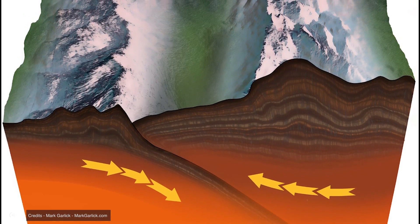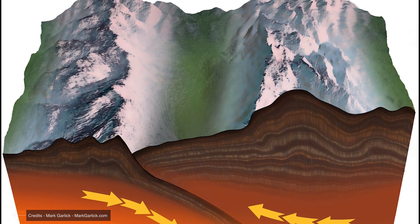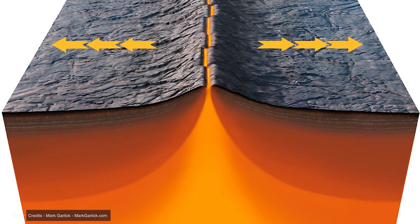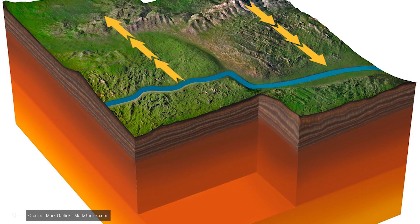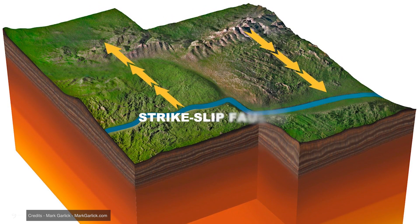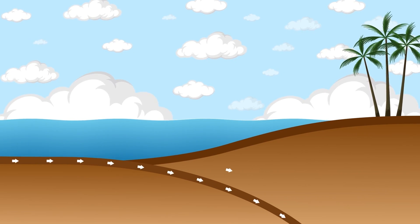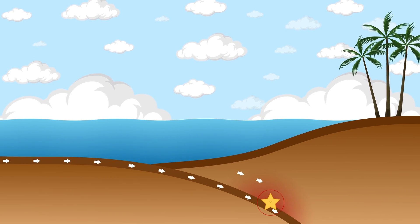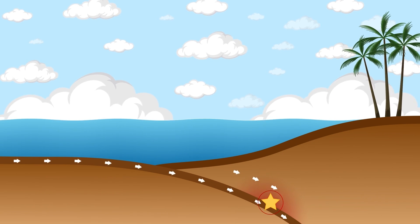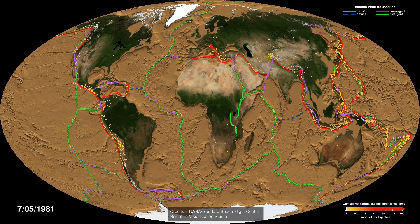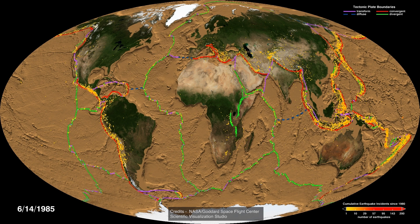Where plates collide — compressive zones — thrust faults will form, whereas where they move apart — extensional zones — normal faults will form. Even when two plates slide past each other, oblique motion faults called strike-slip faults are created. When the two blocks of a fault move, earthquakes are triggered. In summary, it is possible to predict where areas have more earthquakes, namely the plate boundaries. If we compare these boundaries with the distribution of earthquakes in recent years, it is clear how the two perfectly overlap.